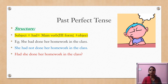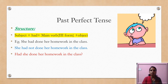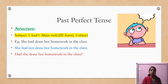The structure of past perfect tense is: subject, then one helping verb — 'had' — then the main verb in third form, then the object. Whenever the tense is perfect — in present perfect or past perfect — we use the main verb in third form. For example, 'She had done her homework in the class.' For negative: 'She had not done her homework in the class.' For interrogative, start with 'had': 'Had she done her homework in the class?'